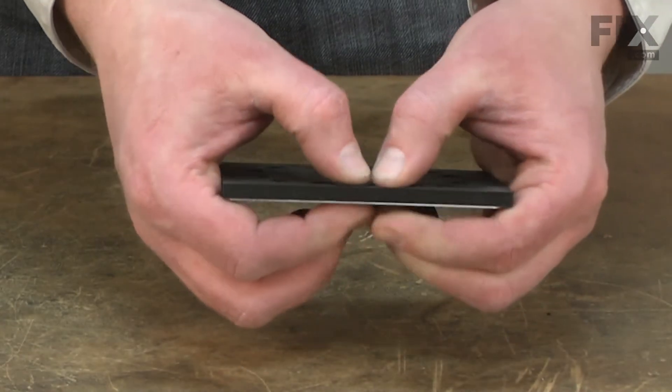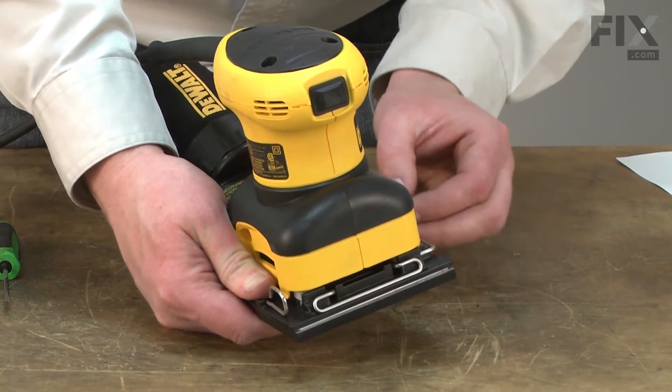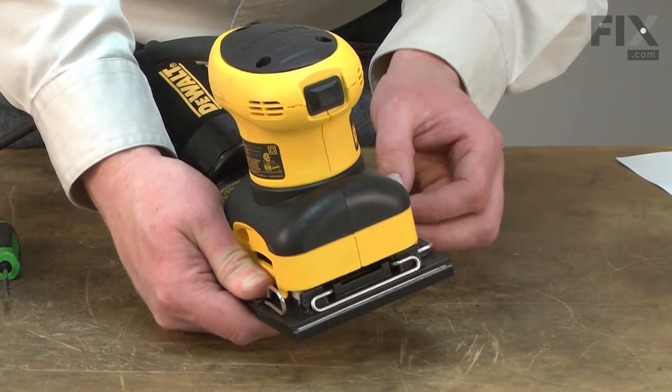The sander pad and backing plate consists of a steel plate with a foam pad adhered to it. The foam pad provides grip to the sandpaper, which helps it to stay firmly attached within the clamps.